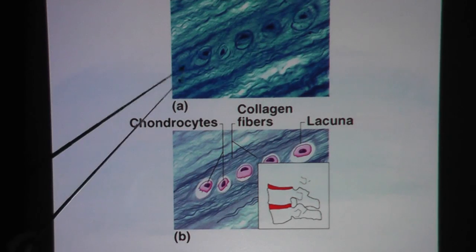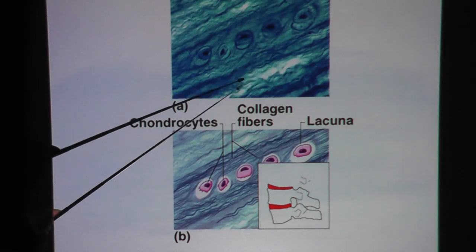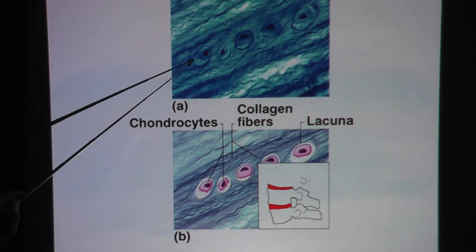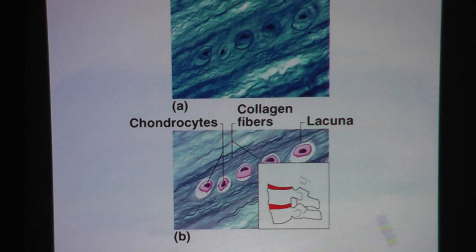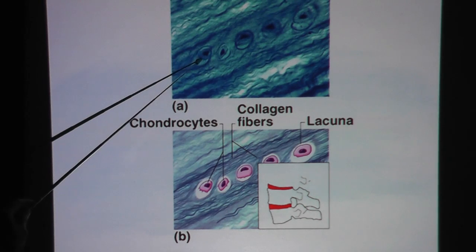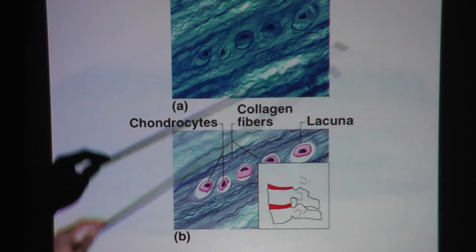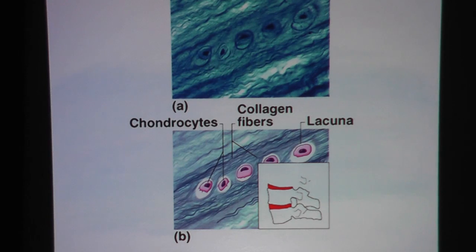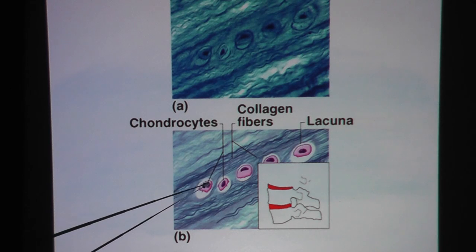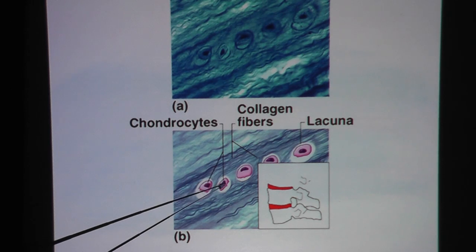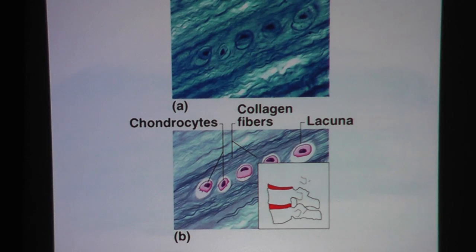Here is the real picture. As you can see, the wavy collagen fiber. Very big cells here — those would be chondrocytes. Notice there's a little bit of space around each cell, and that would be the lacuna. The same picture is drawn here at the bottom so it's easier to see. Here you can see clearly the chondrocytes and the white spaces around them — that would be lacuna.